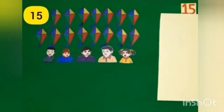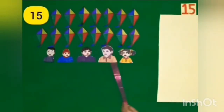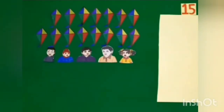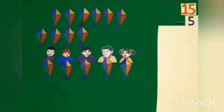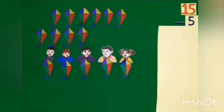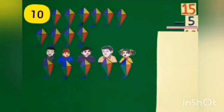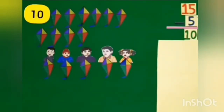We have 5 kids. We have to distribute these 15 kites equally among 5 kids. We will take 5 kites and give 1 kite to each child. When we subtract these 5 kites from 15 kites, we are left with 10 kites. 15 minus 5 is equal to 10.